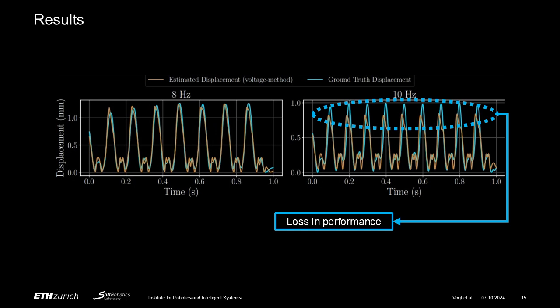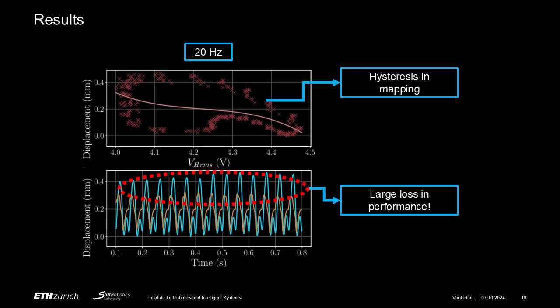This trend continues as we increase the actuation frequency to 20 Hz, where we observe an error of 26%. The cause for this can be found in the fitting plot for an actuation frequency of 20 Hz as shown here. We observe a clearly defined hysteresis effect of the ground truth displacement as a function of the voltage measured across the sensing electrodes. Due to this, our third-order polynomial mapping approach starts to fail at frequencies of around 10 Hz.